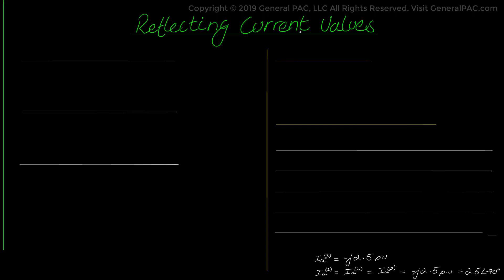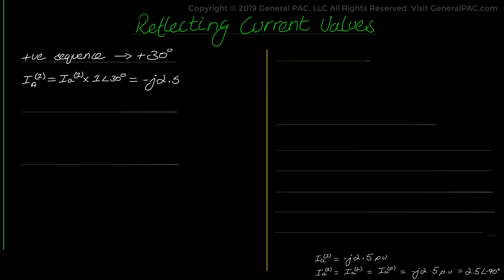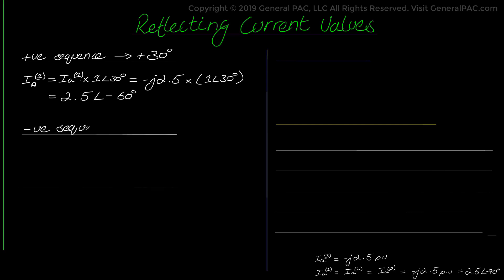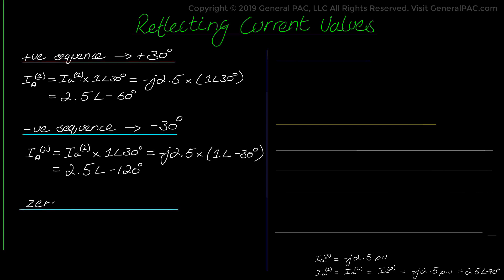Given that we have a DY1 or DAB transformer connection, to determine the high-voltage positive sequence quantity we will shift the low-voltage positive sequence components by positive 30 degrees. That can be done by multiplying the low-voltage fault current by a value of 1 angle +30 degrees, giving us 2.5 at the angle of negative 60 degrees. Similarly, we will shift the negative sequence components by negative 30 degrees, done by multiplying the low-voltage fault current with a value of 1 angle negative 30 degrees. For the zero-sequence component however, it will be non-existent because the high-voltage side is the delta side of the transformer, and the delta windings do not allow zero-sequence current to flow past them — they are trapped in the delta and keep flowing as a circulating current.